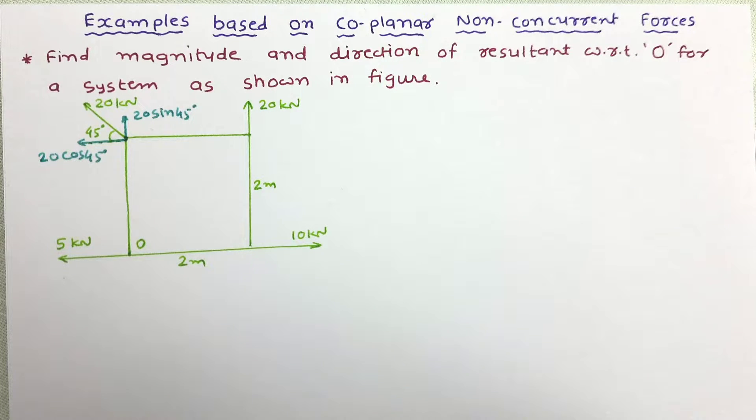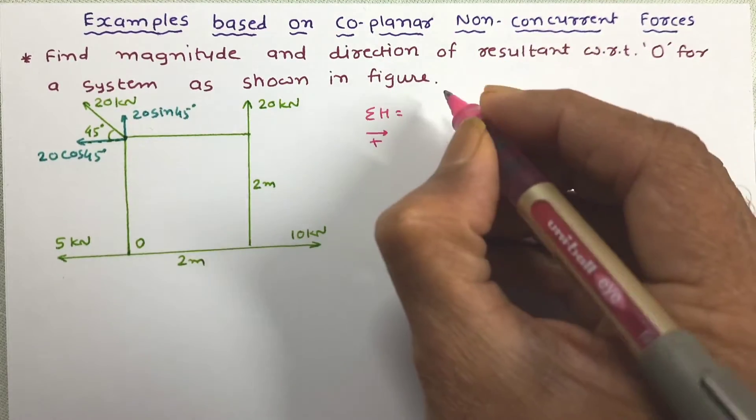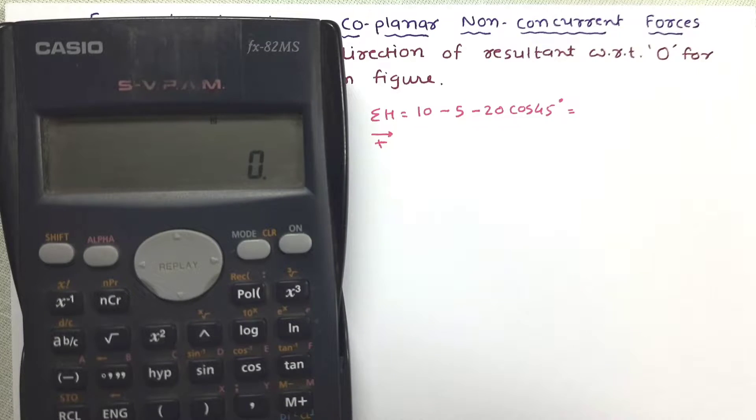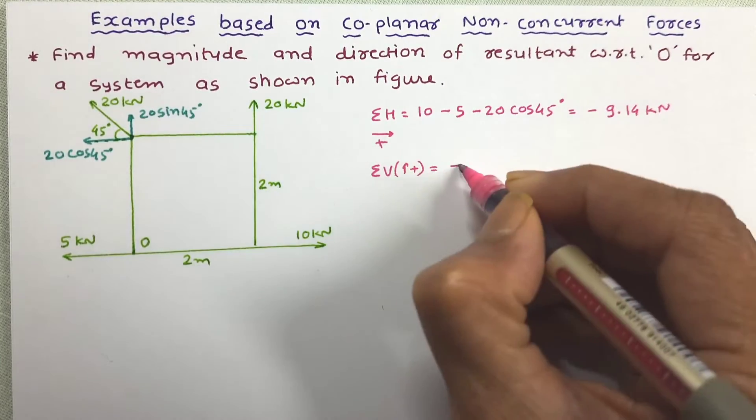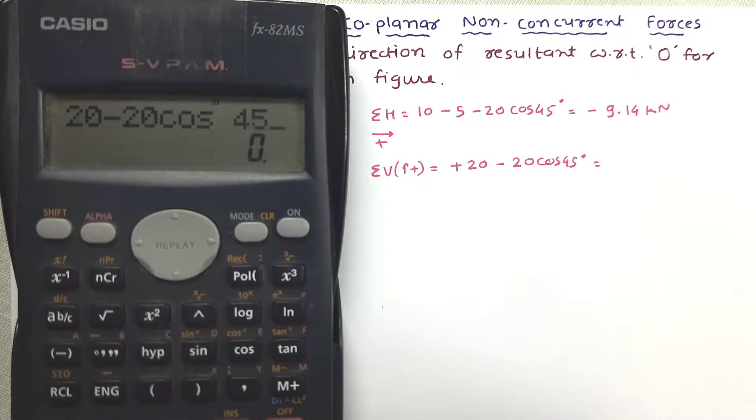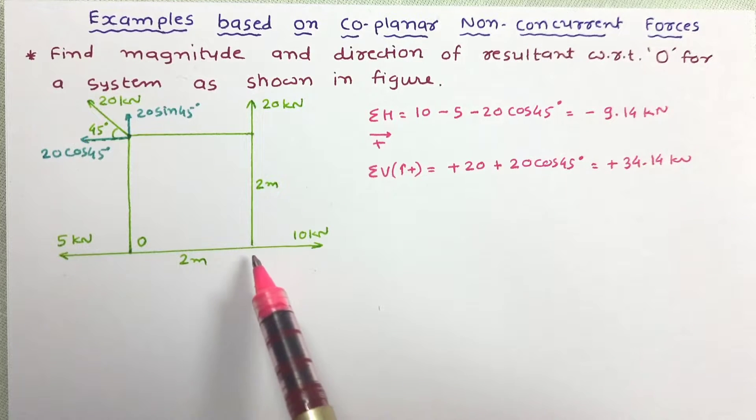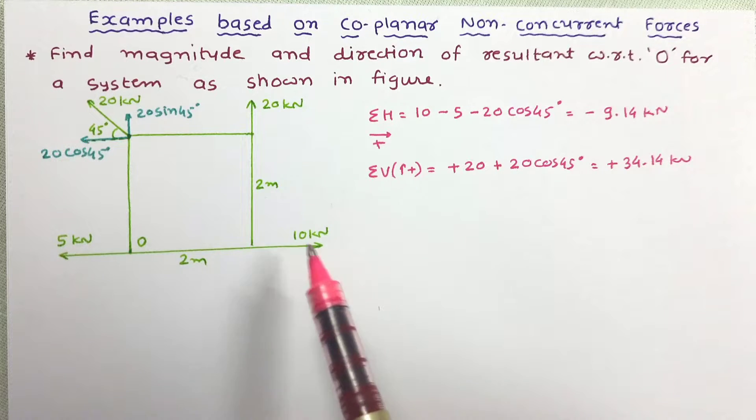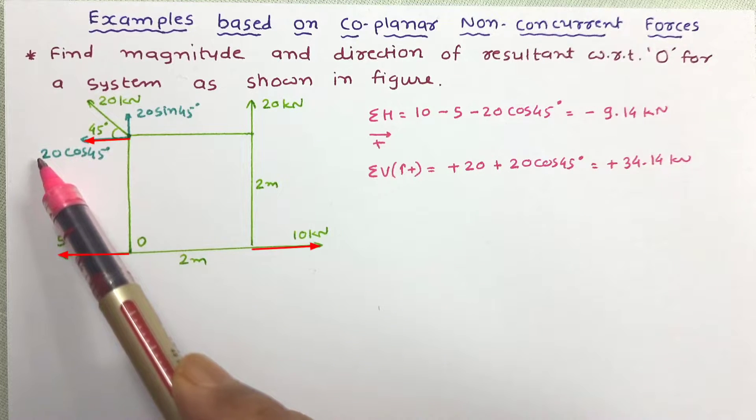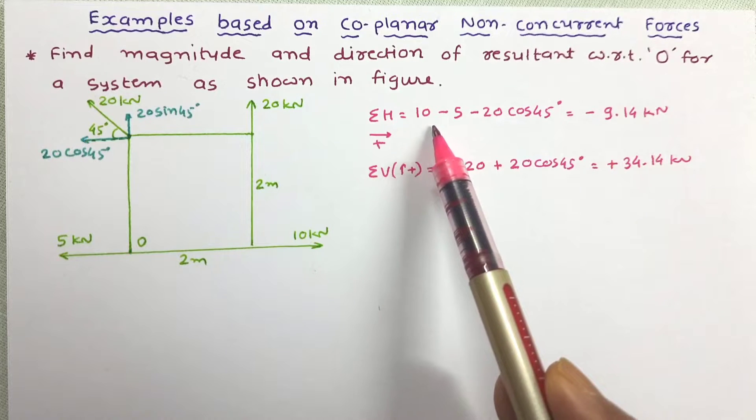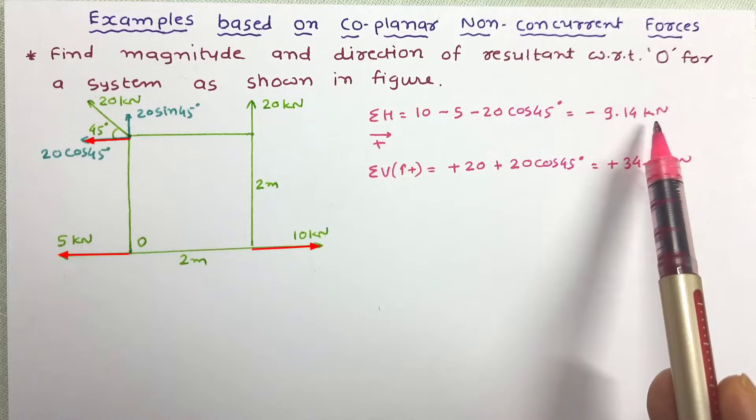Now let us determine sigma h and sigma v. Here three different horizontal forces are there: 10 kilonewtons is in positive direction, 5 kilonewtons and 20 cos 45 degrees are in negative direction. So the summation of sigma h is minus 9.14 kilonewtons.